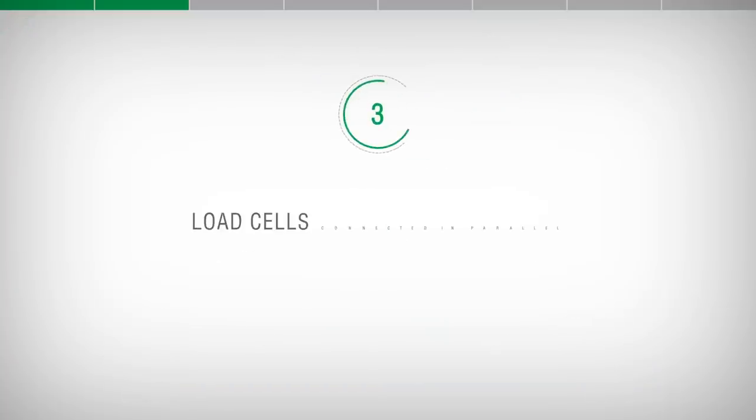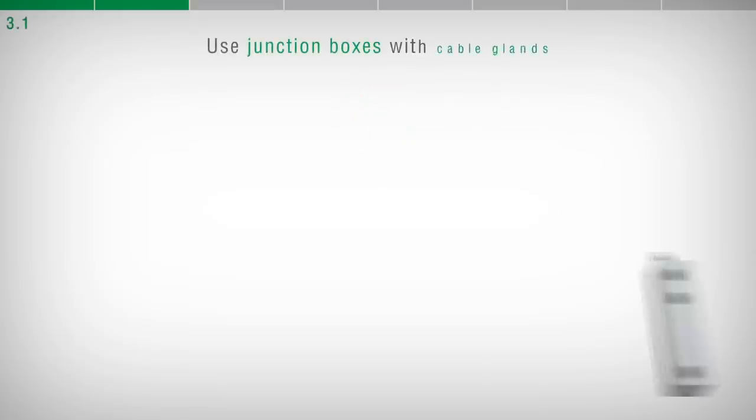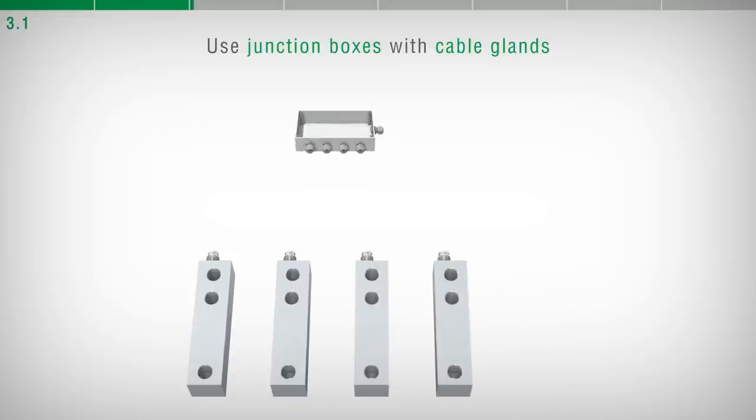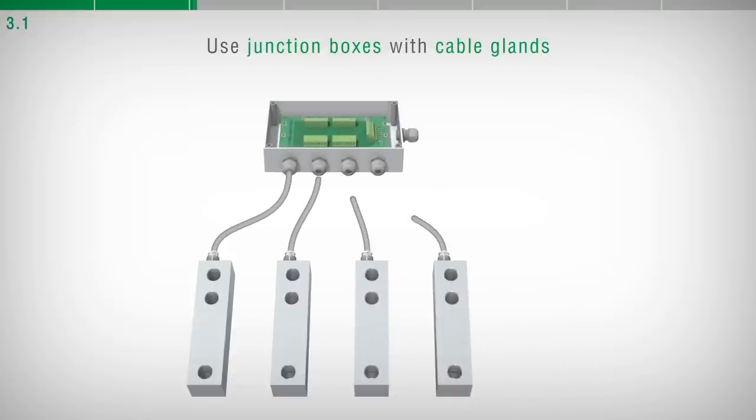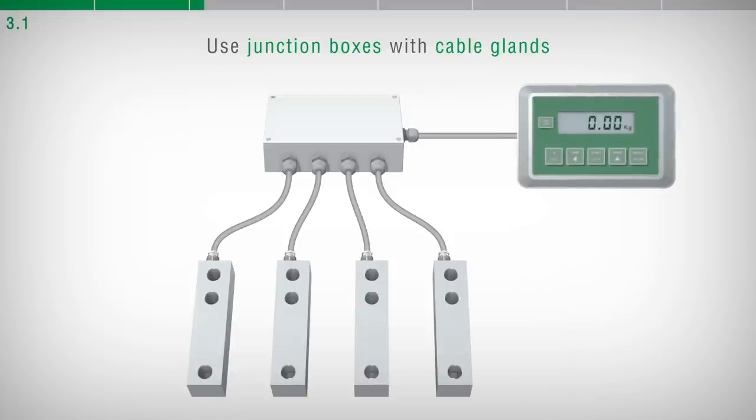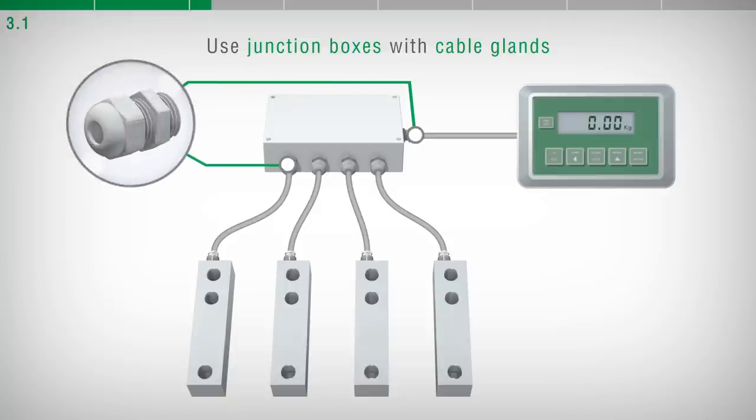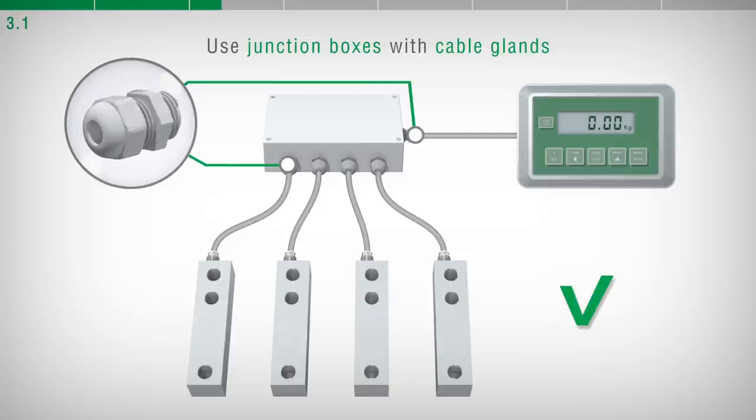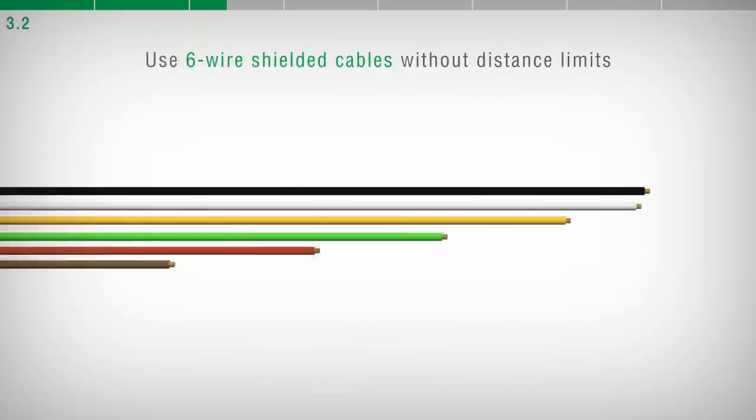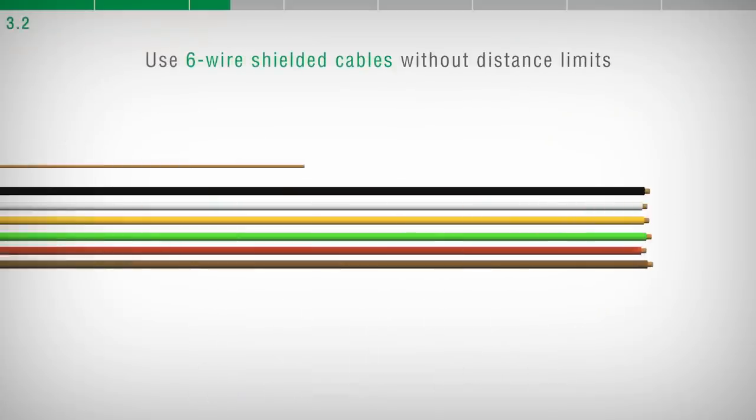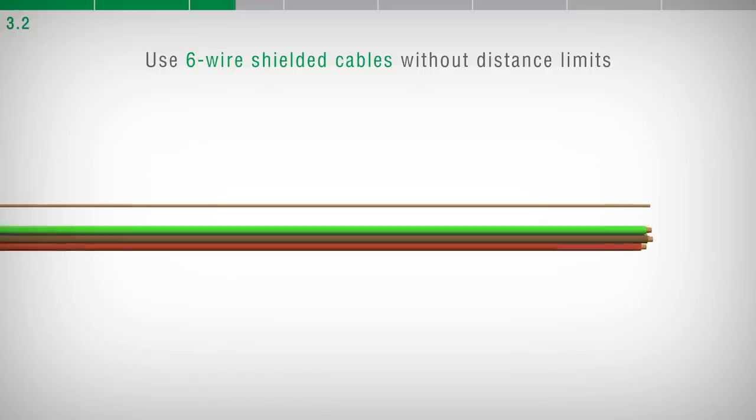Load cells connected in parallel. To connect several load cells in parallel, use a waterproof junction box with a suitable terminal board or a multi-channel transmitter in a box. The incoming and outgoing cables require the installation of cable glands. The extension cables used for connection must be shielded. It is recommended to use a six-wire cable with reference sense management, able to compensate for the voltage drop due to the distance between the devices.